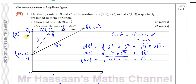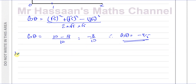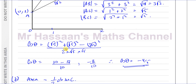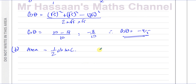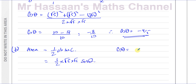For part B, we need to calculate the area of triangle ABC. The area of a triangle can be found using the formula: half × a × b × sin C, where the angle C is between the two known sides. We know cos θ = −4/5, and the two sides making angle ACB are both √5. Now we need to find sin θ.